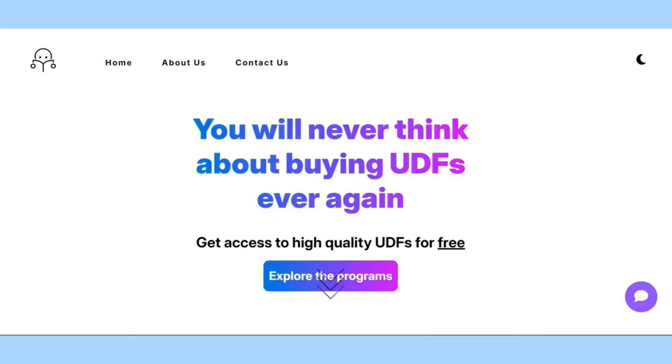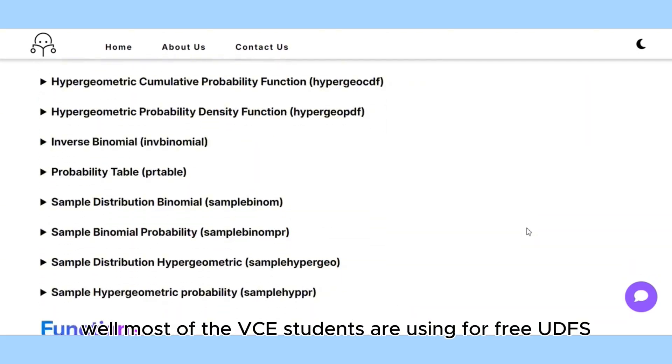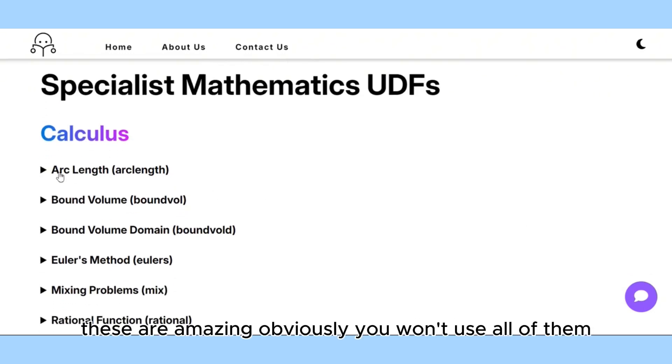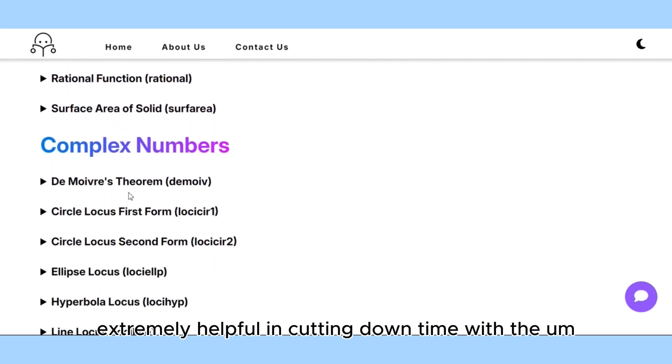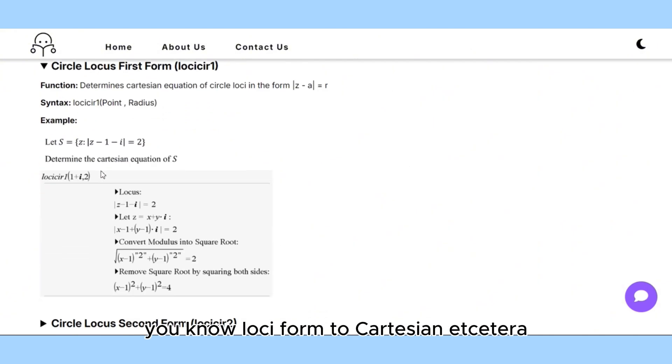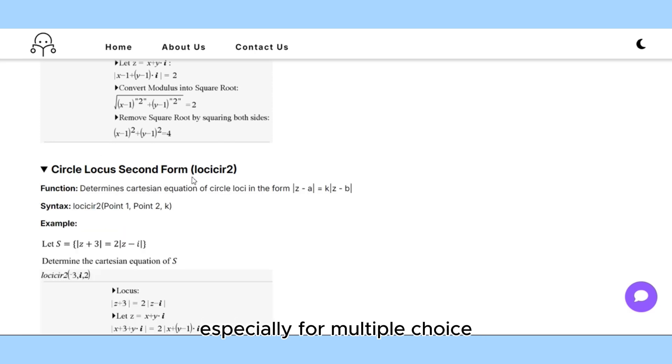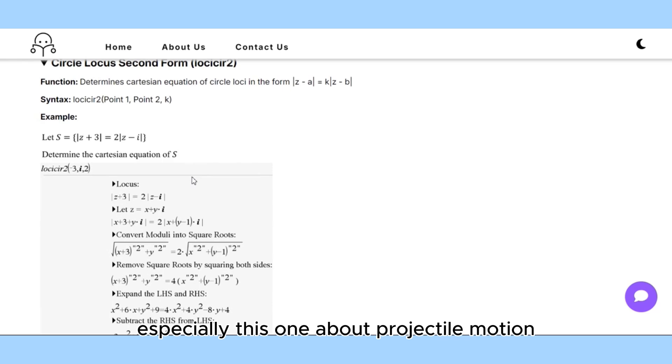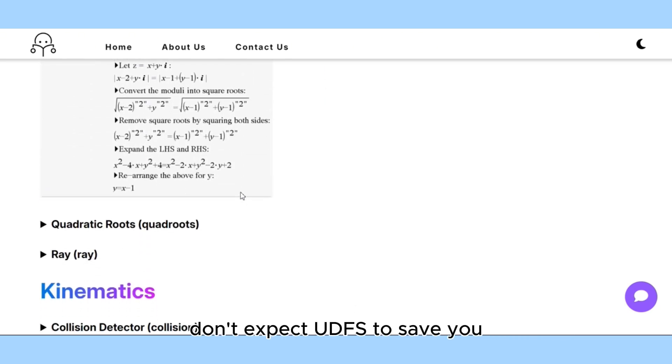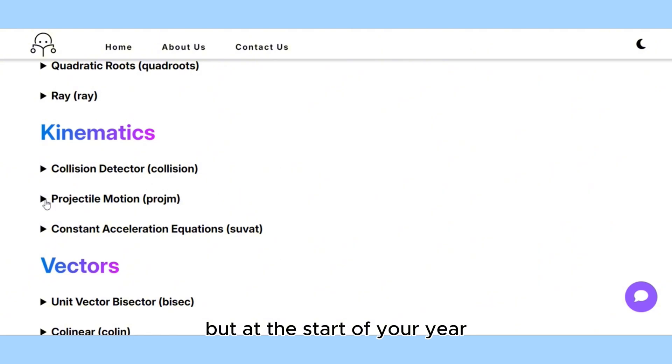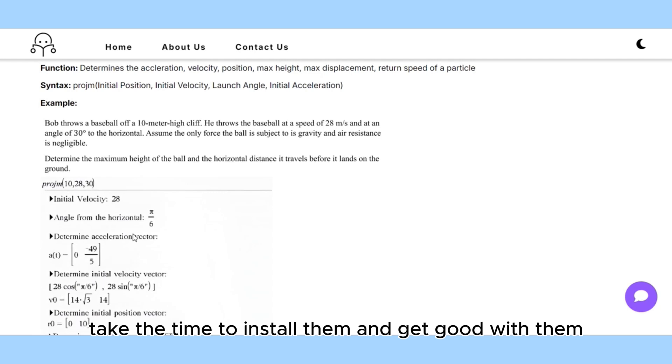As a Texas user in a Casio Classpad school, I spent a long time creating my own UDFs, and I regret that I didn't just go to Lazy Maths earlier. This is what most of the VCE students are using for free UDFs. These are amazing. I found these ones extremely helpful in cutting down time with the loci and the conversion from loci form to Cartesian. It will save you so much time, especially for multiple choice, especially this one about projectile motion. It literally takes care of your entire those long lengthy projectile questions. Don't expect UDFs to save you, but at the start of your year, don't be like me. Download all of these, take the time to install them and get good with them and you will thank yourself later.